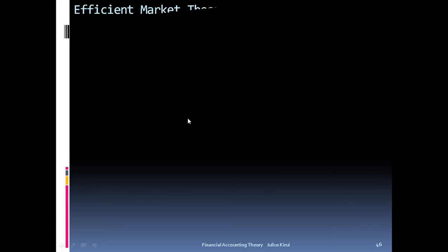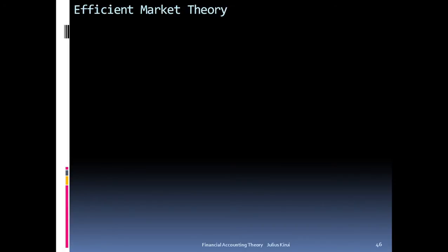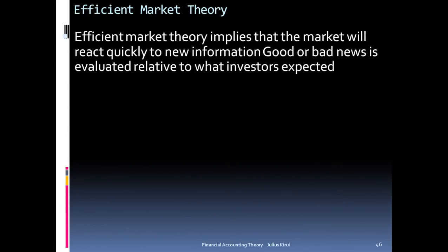Efficient market theory. This theory is based on the information provided in the market. Efficient market theory implies that the market will react quickly to new information. Good or bad news is evaluated relative to what investors expect. Any information that comes into the market that is new, investors will react to, whether it is good or bad.